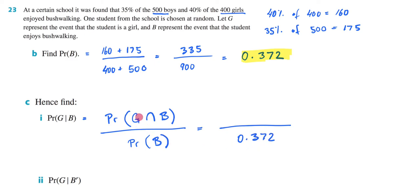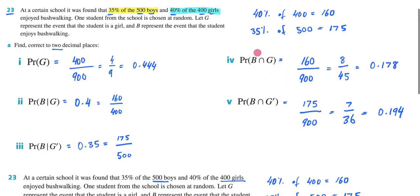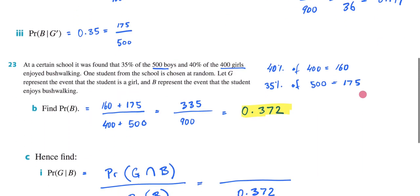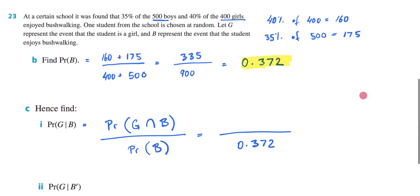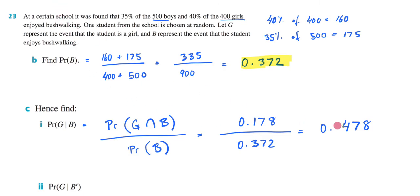We also figured out the probability of girl intersection with enjoying bushwalking back in Part A. If we go up here, it's 0.178 — my B and G are just on opposite sides, but that doesn't matter. So I'm going to bring down 0.178 here. My answer to this is going to be 0.478. So that's the answer to 23C — 0.478.